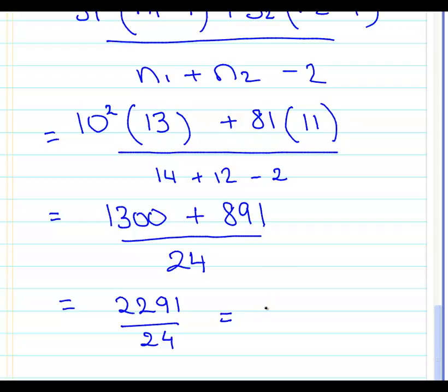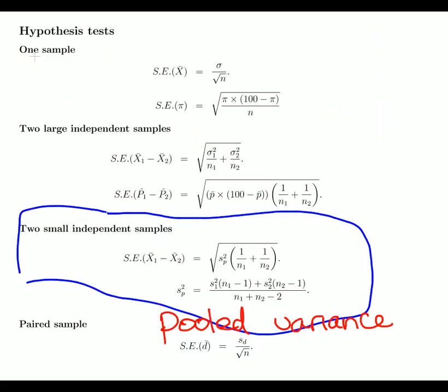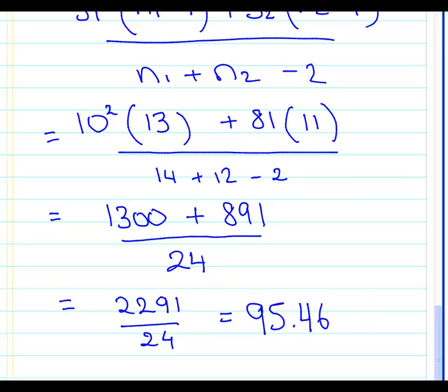A little bit of calculator work: 2191 over 24. That is approximately 95.46 thereabouts. Let's go back to our... that's 95.46. And let's just check what do we do now. Okay, so 1/n1 plus 1/n2, okay. Multiply that out. So essentially what we're doing here is we're using this bit here now, the top bit.